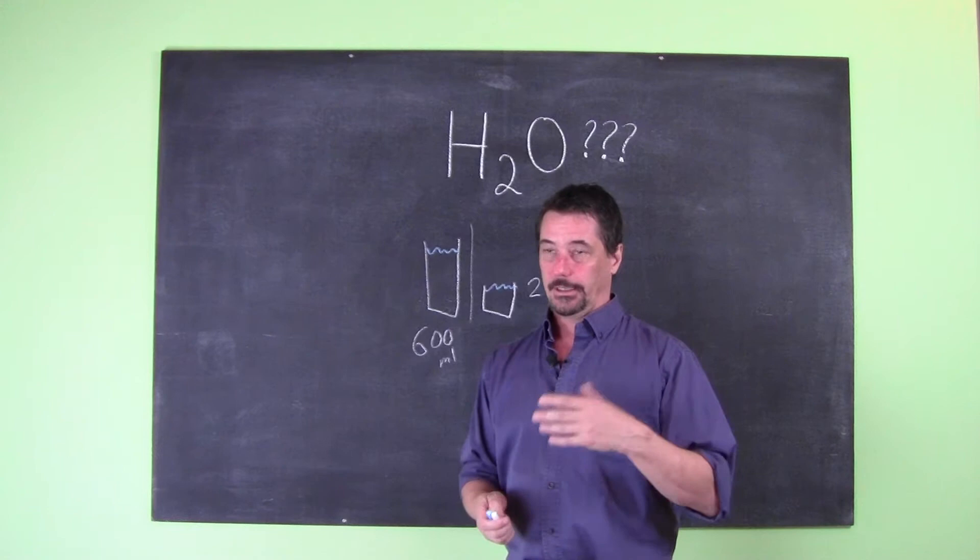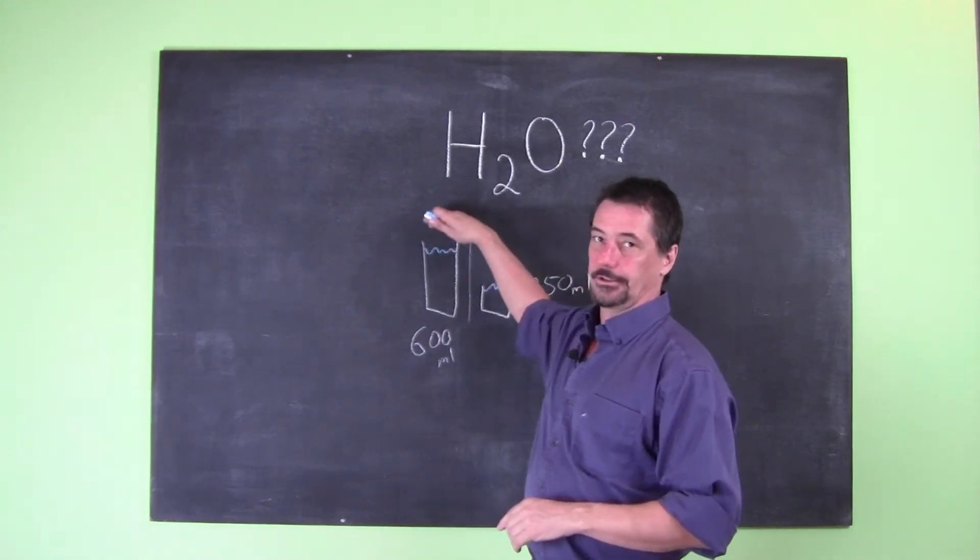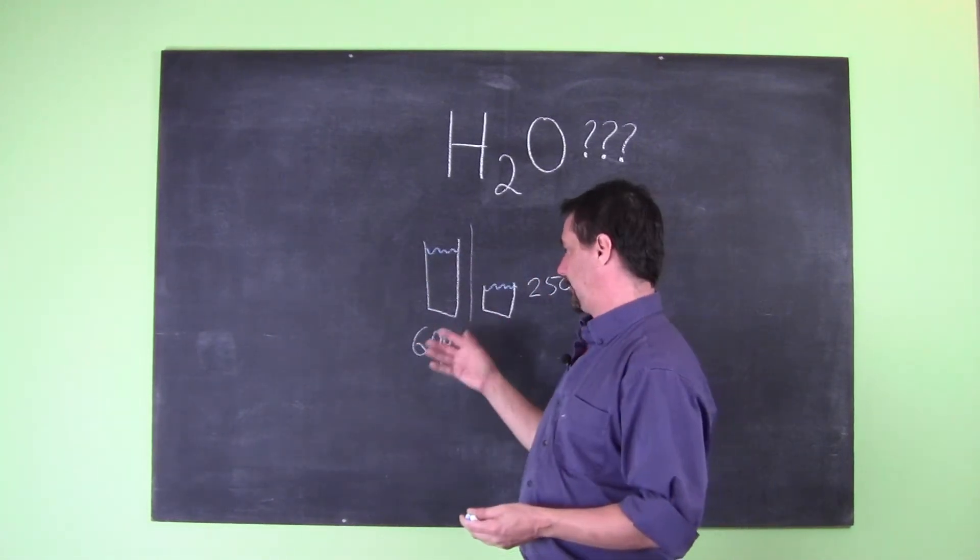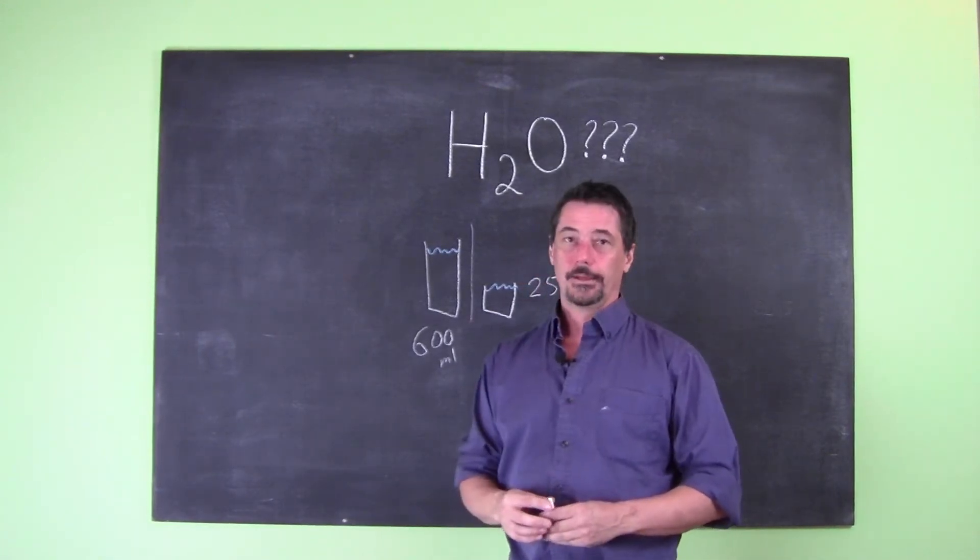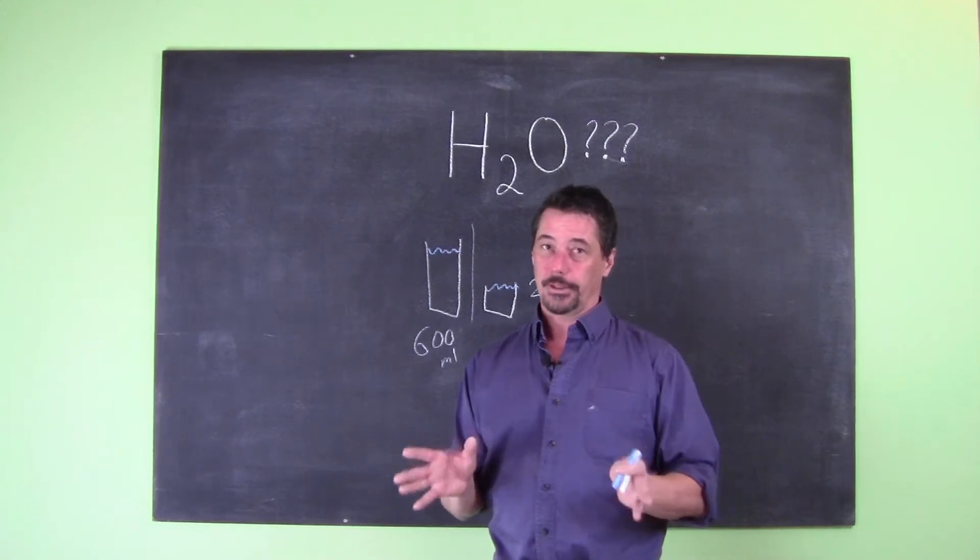But when you actually sit there and imagine eight glasses, say you have eight glasses in a restaurant, or you know, 600 ml glass, which is sort of your average size of a serving glass or on the dinner table, you're drinking way too much water. And I'll explain why that's dangerous.